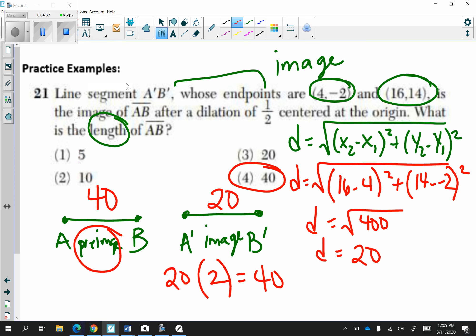Choice 4. If we started with the pre-image of 40 by a scale factor of one-half, we would get the image of 20. 40 times one-half is equal to 20.